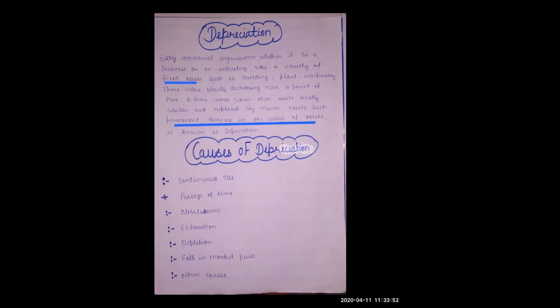The fifth cause is depletion. These assets can be used only until their limited boundaries are exhausted, like coal mines.